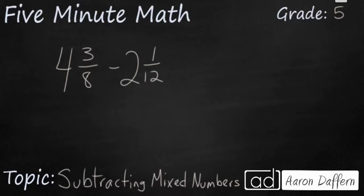We'll start with a simple example here. You see we have 4 and 3 eighths minus 2 and 1 twelfth. So mixed numbers are simply whole numbers with fractions next to it. What we're going to do is focus on the fractions first. We've got to get those right.